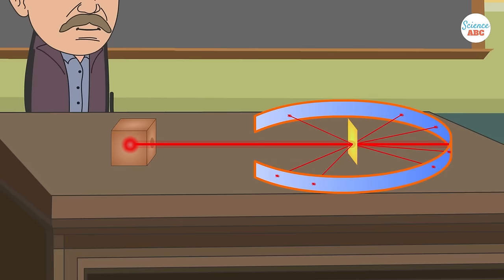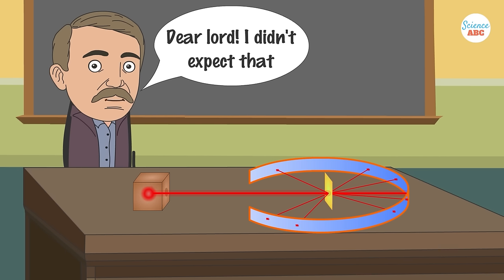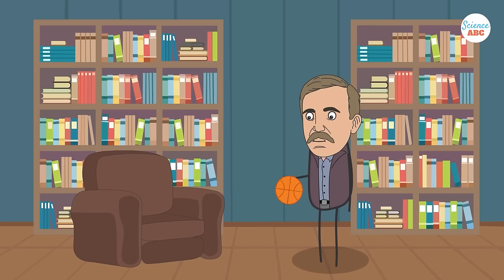Rutherford expected the particles to bullet through the foil and hit the screen behind it, and while most of the particles did behave as expected, some were deflected at an angle greater than 90 degrees.